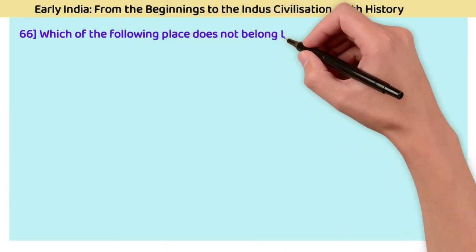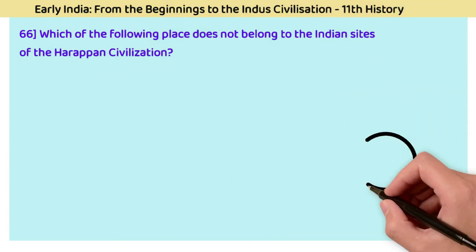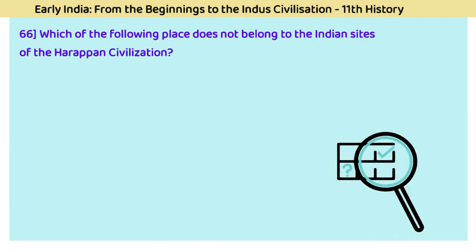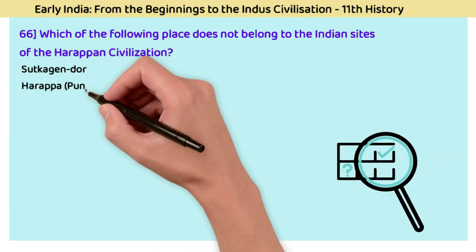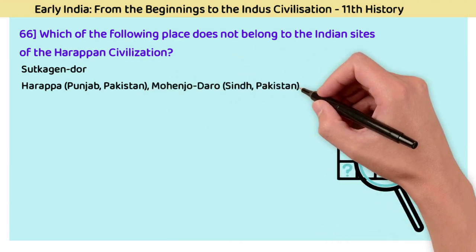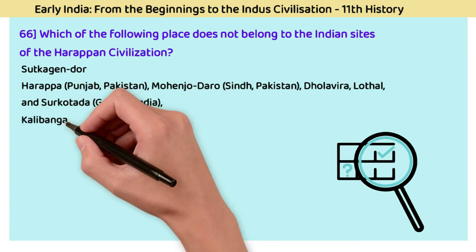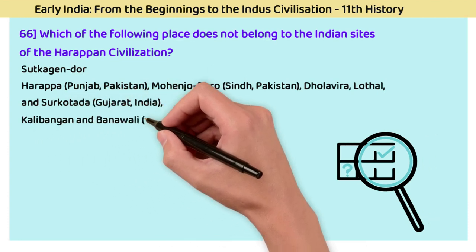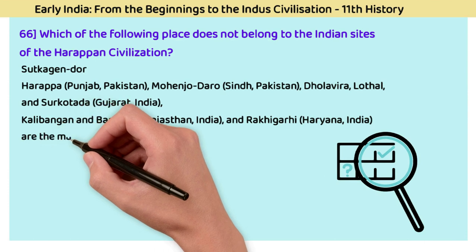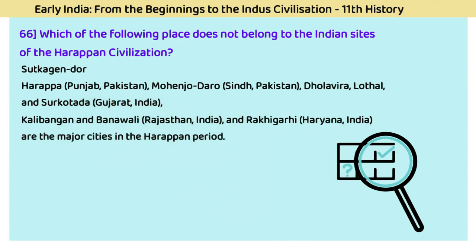Question 66: Which place does not belong to the Indian sites of the Harappan civilization? The answer is Sutkagan Dor. Harappa and Mohenjo-daro in Pakistan; Dholavira, Lothal, and Surkotada in Gujarat, India; Kalibangan and Banawali in Rajasthan, India; and Rakhigarhi in Haryana, India are the major cities of the Harappan period.